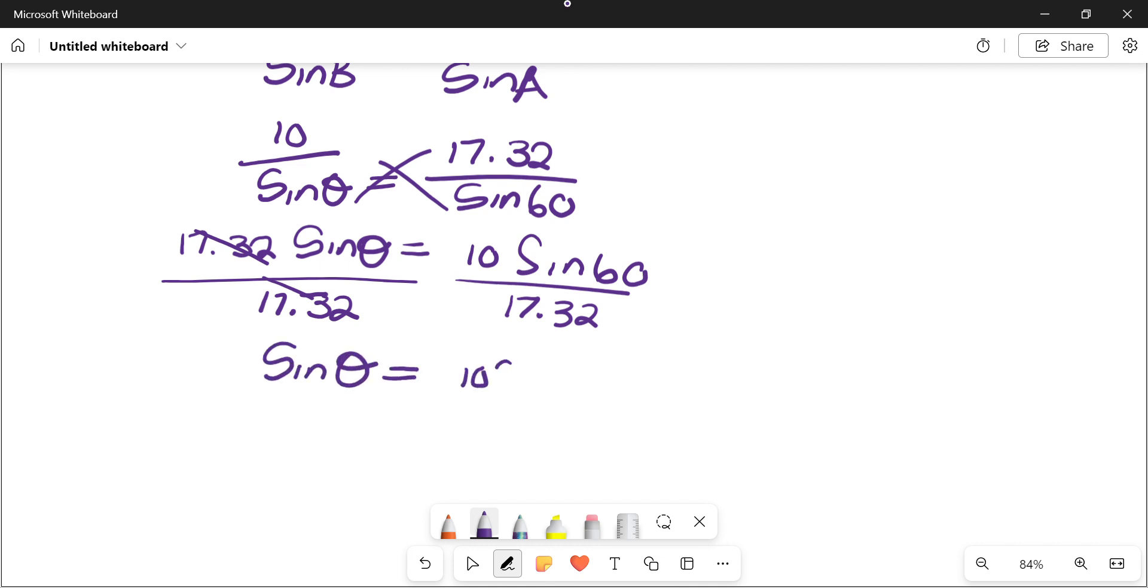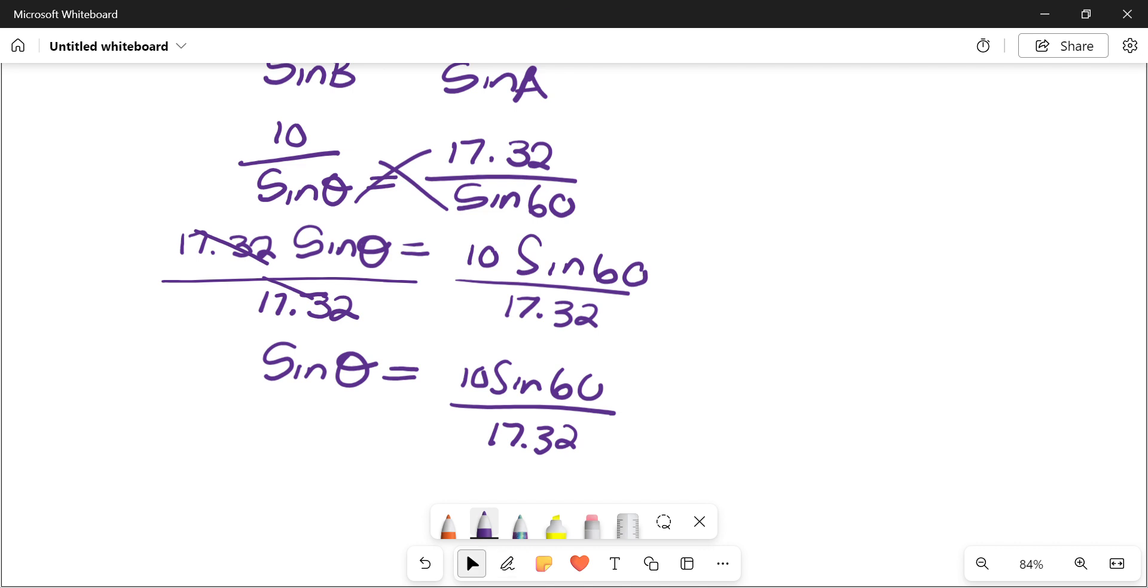Then we can divide both sides by 17.32. Sine of theta is equals to 10 sine 60 over 17.32. I know I'm essentially writing this thing out like 20 times for no reason, but bear with me, I'm satisfying my brain.